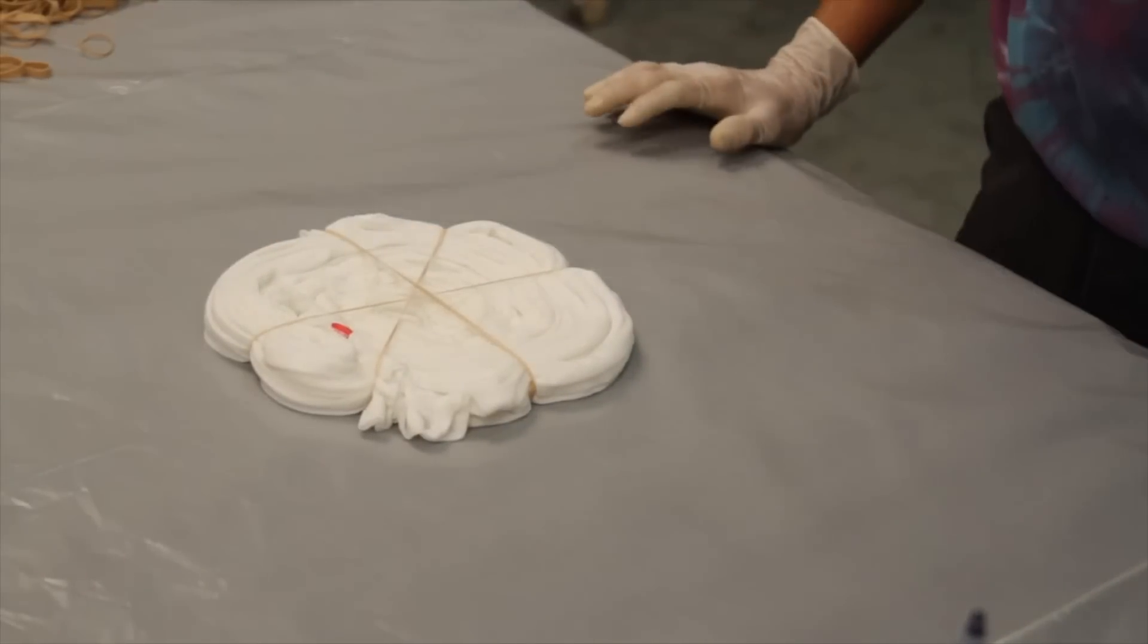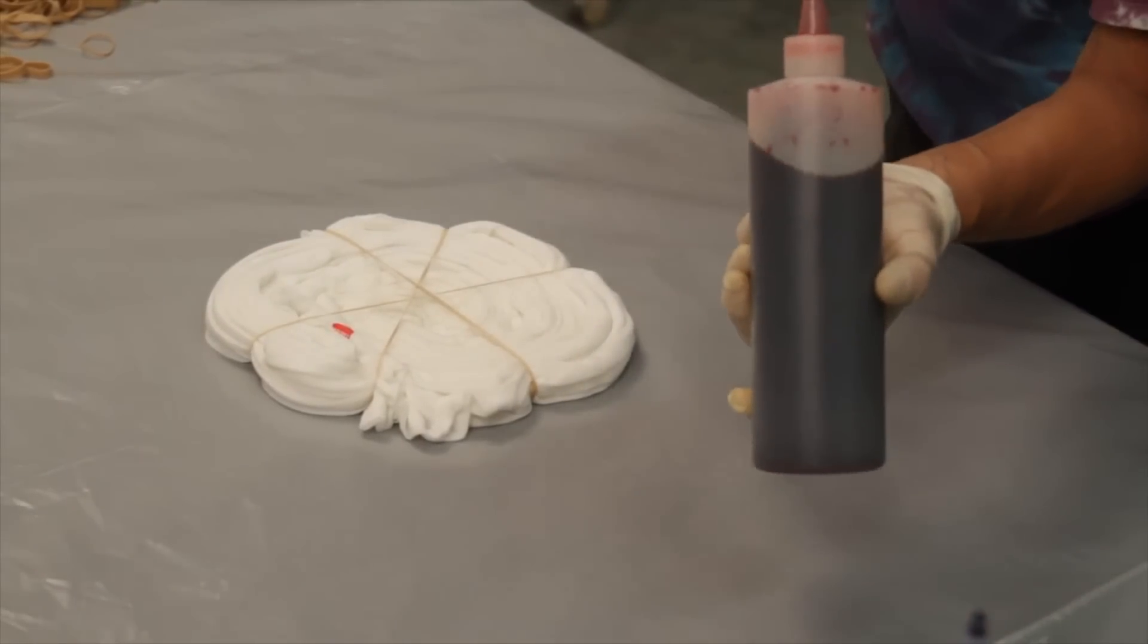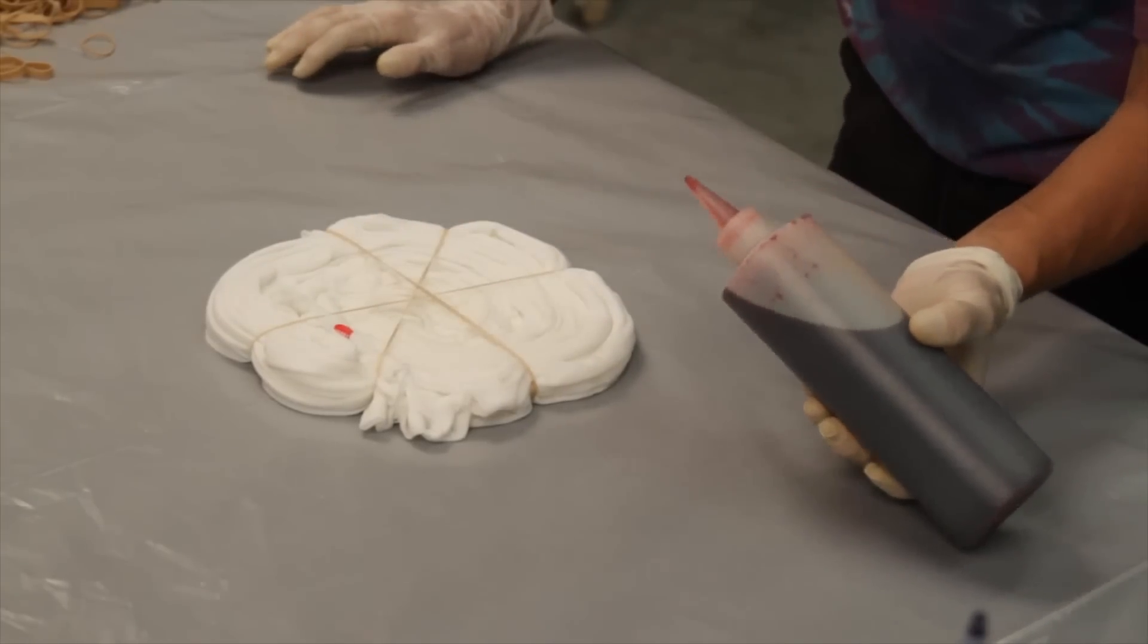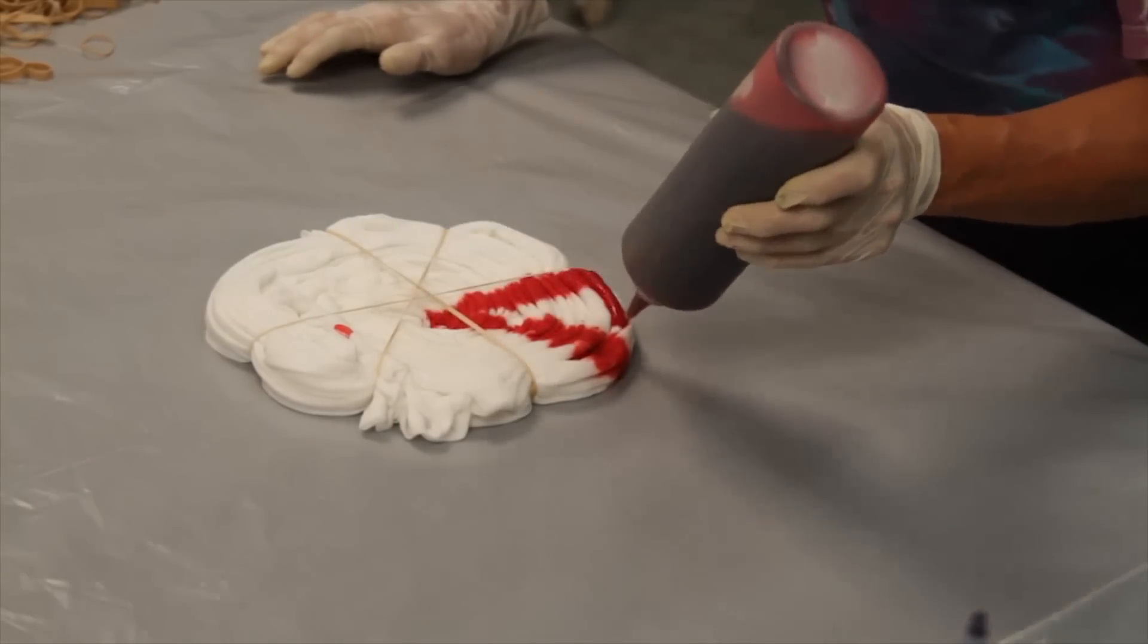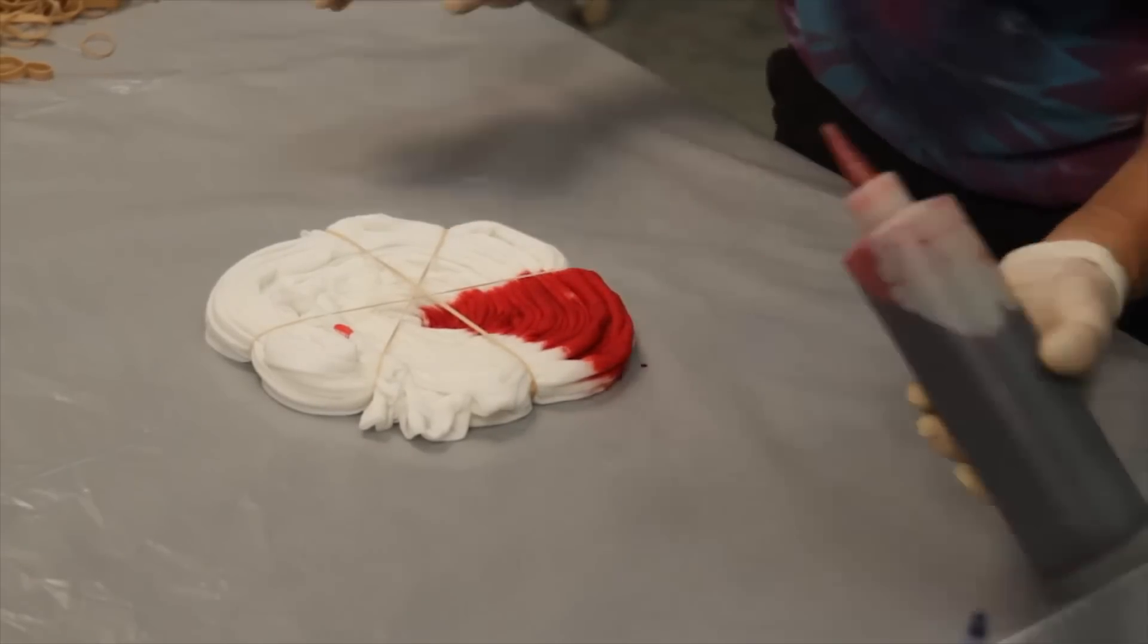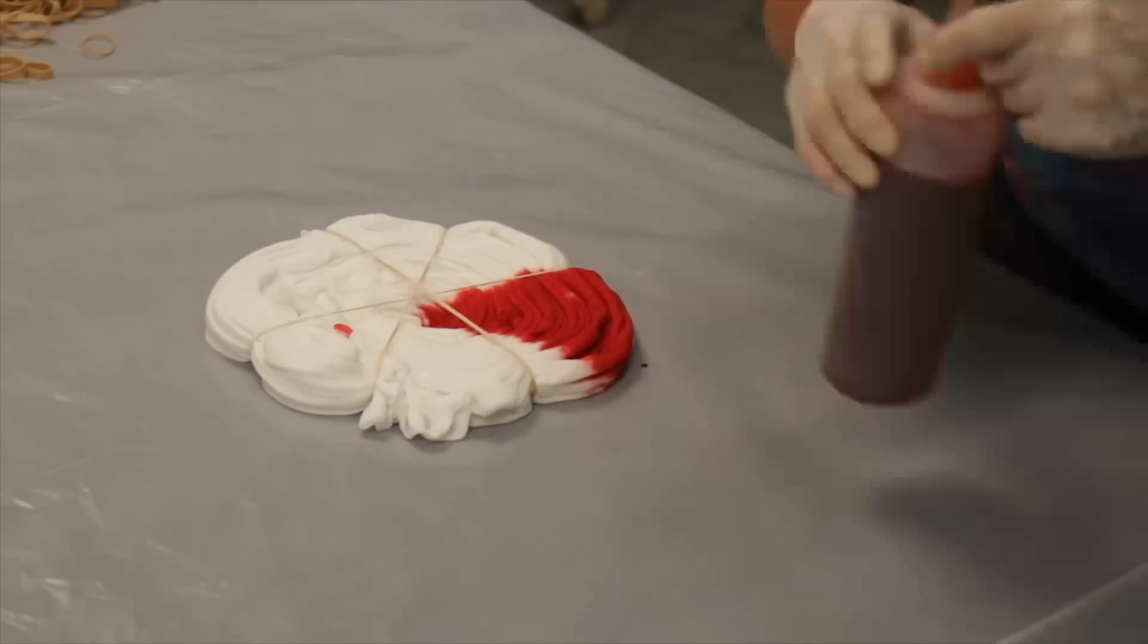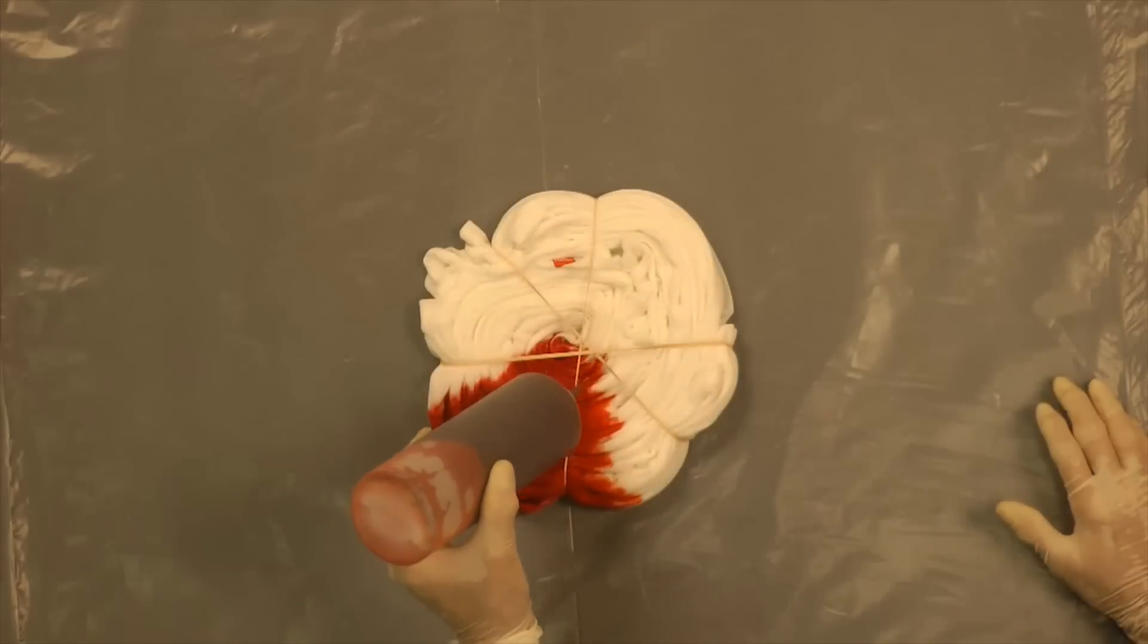All right, so we want to start with, we'll just go rainbow order, and I'm going to keep my blues up toward the collar, blues and purples toward the collar this time, so I'll start down here with my red. And all the way to the center, I'll go in rainbow order because it's easier to remember, orange.